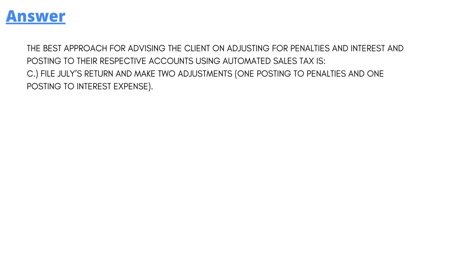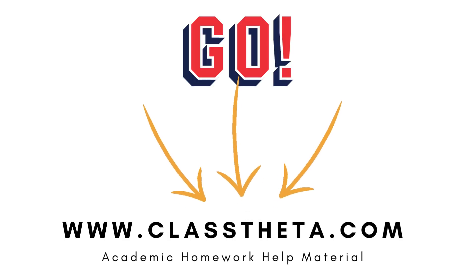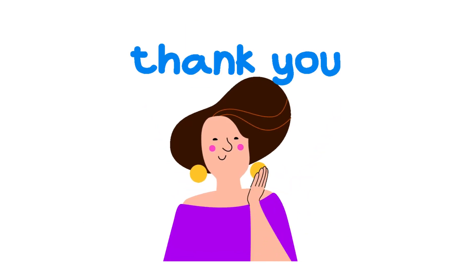The correct answer is: the best approach for advising the client on adjusting entries for penalties and posting their respective accounts using automated sales tax is Option C — file July's return and make two adjustments. So that's the correct answer.